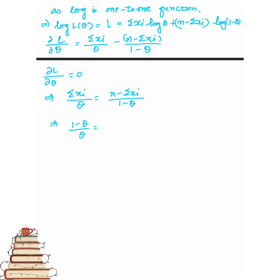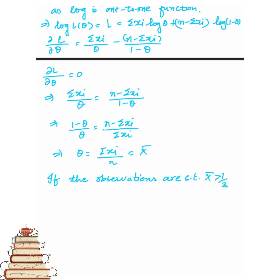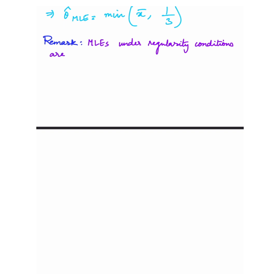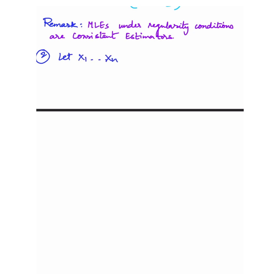The catch is: if the observed values of theta are restricted such that theta is from 0 to 1/3, then what will be the estimator under this restriction? If x-bar is from 0 to 1/3, then x-bar is taken as the MLE. If x-bar exceeds 1/3, then 1/3 is taken as the MLE. So theta MLE equals the minimum of x-bar and 1/3. It is important to remember that MLEs under regularity conditions are consistent.